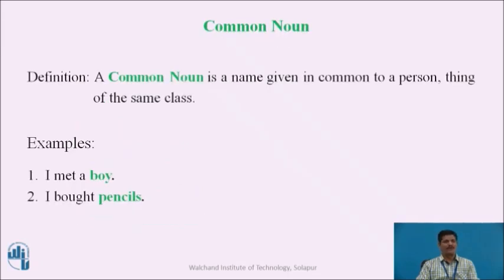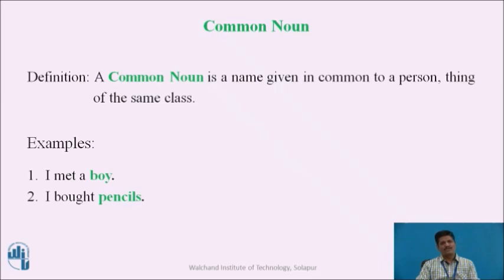A common noun is a name given in common to a person or thing of the same class. In the sentence 'I met a boy,' the word 'boy' is a common noun because it commonly refers to various boys. In 'I bought pencils,' 'pencils' is a common noun because it commonly refers to various types of pencils. Other examples include man, woman, and city — all common nouns.